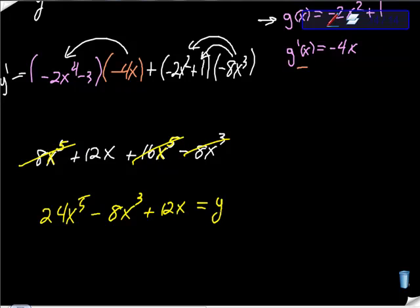Minus 8x cubed plus 12x. And remember, that's all equal to y prime. And another way of saying y prime would be to call that dy dx. Right? All right. Look, I hope this is helpful. If you have any questions or comments, please let me know. And if you haven't already subscribed, please subscribe. Thanks. Peace.